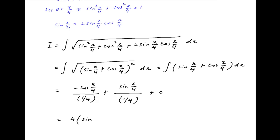This simplifies to 4(sin(x/4) - cos(x/4)) plus the constant of integration, which is the required answer.